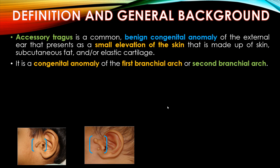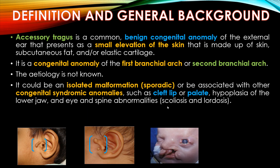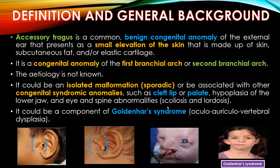It is a congenital anomaly of the first or second branchial arch. The etiology is not known. It could be an isolated sporadic malformation or be associated with other congenital syndromic anomalies such as cleft lip or palate, hypoplasia of the lower jaw, and eye and spine abnormalities such as scoliosis and lordosis. It could be a component of Goldenhar syndrome, which is oculoauriculovertebral dysplasia.